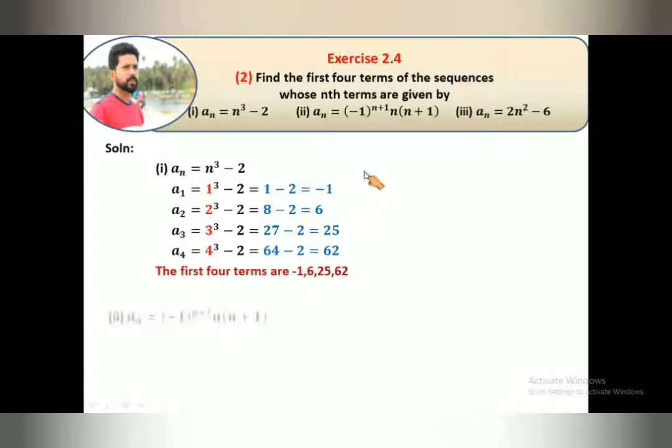In the second part, we want to find out a_n = (-1)^(n+1) · n(n+1). Same procedure. In the first part, we substitute 1 and 2. a₁ = (-1)^(1+1) · 1 · 2. The power is an even number so the answer is plus 1, times 2 equals 2.